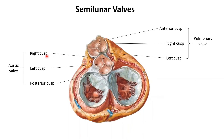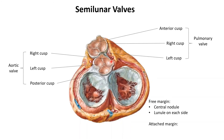Looking at the right cusp of the aortic valve: this is its free margin and this is its attached margin. Along the free margin there is a central nodule. The remainder of the free margin on each side of the nodule is called a lunule.